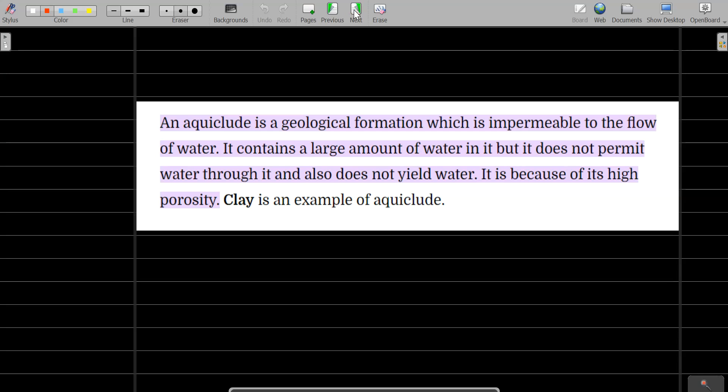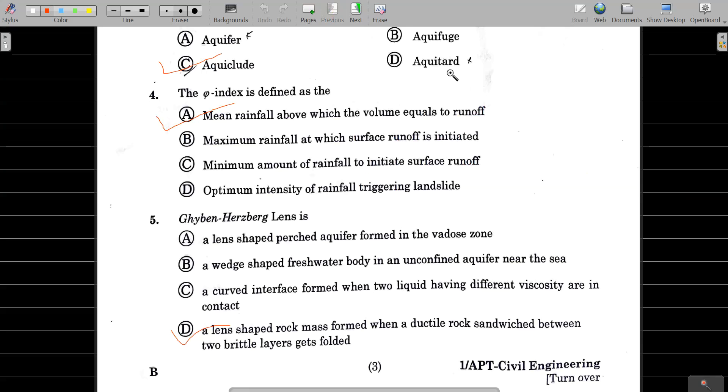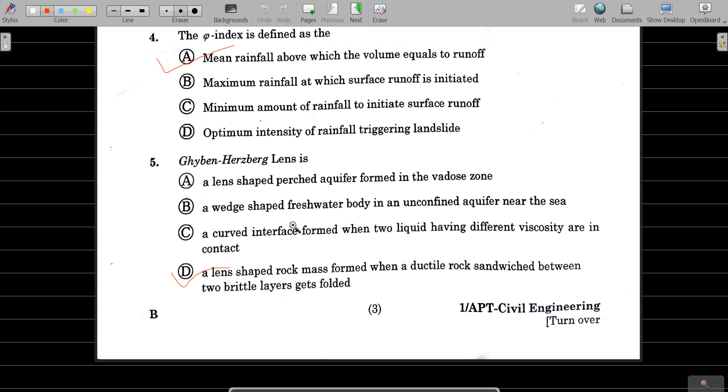Question 3 option is phi-index. Phi-index is basically mean rainfall above which the volume equals runoff. Question about horseback lens - the most preferable answer will be option D: convex-shaped rock mass which is formed when ductile rock sandwiched between two brittle layers gets folded. Option D is the correct answer.